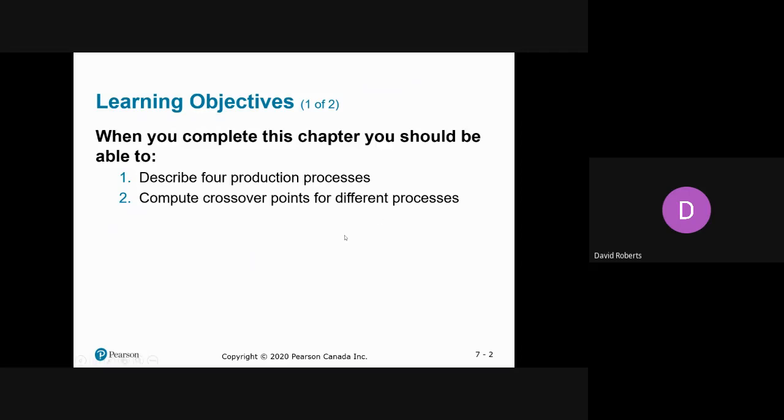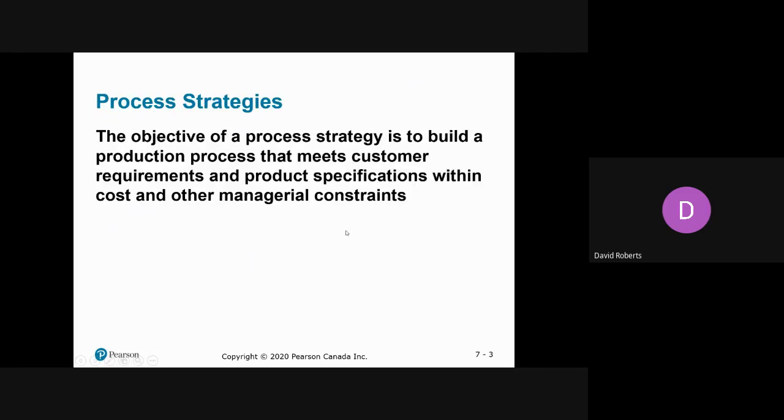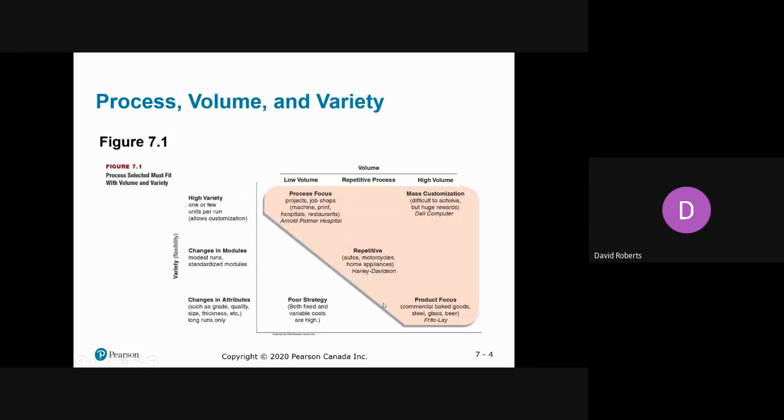There are four types of basic strategies and companies will typically use all four or a combination. The process strategy is for low volumes and high variety. A lot of textbooks refer to this as job shops. You can see examples like a restaurant or hospital where you have lot sizes typically of one or very small amounts and everyone is unique.